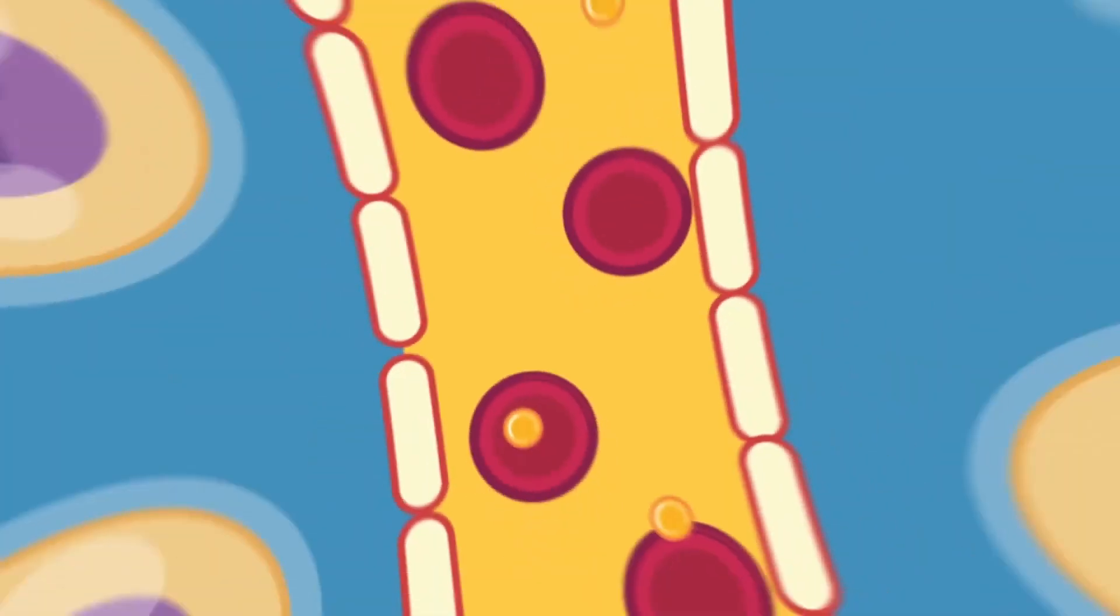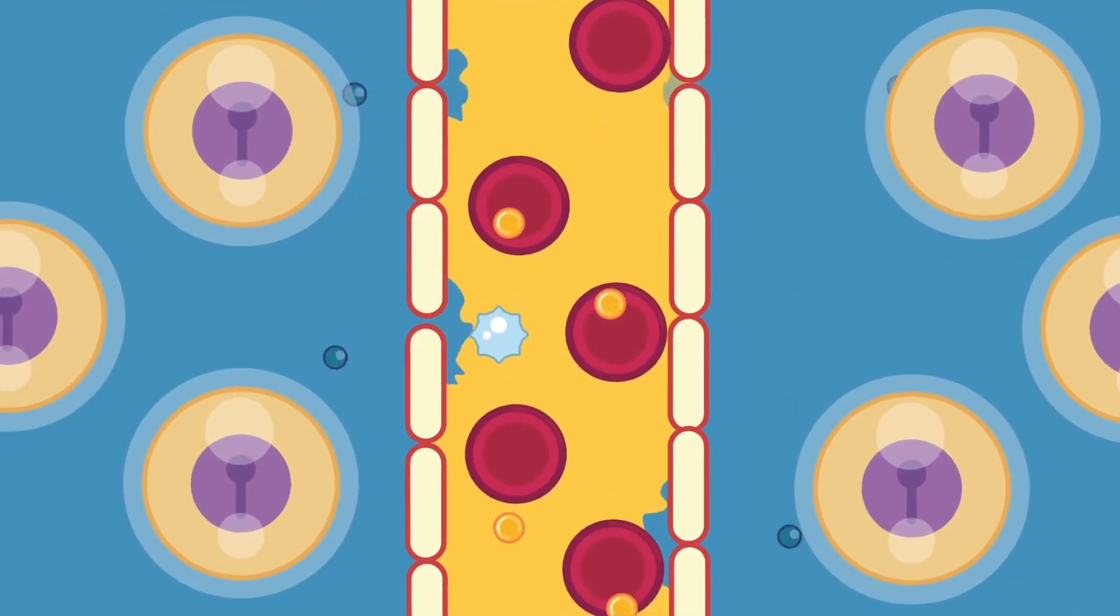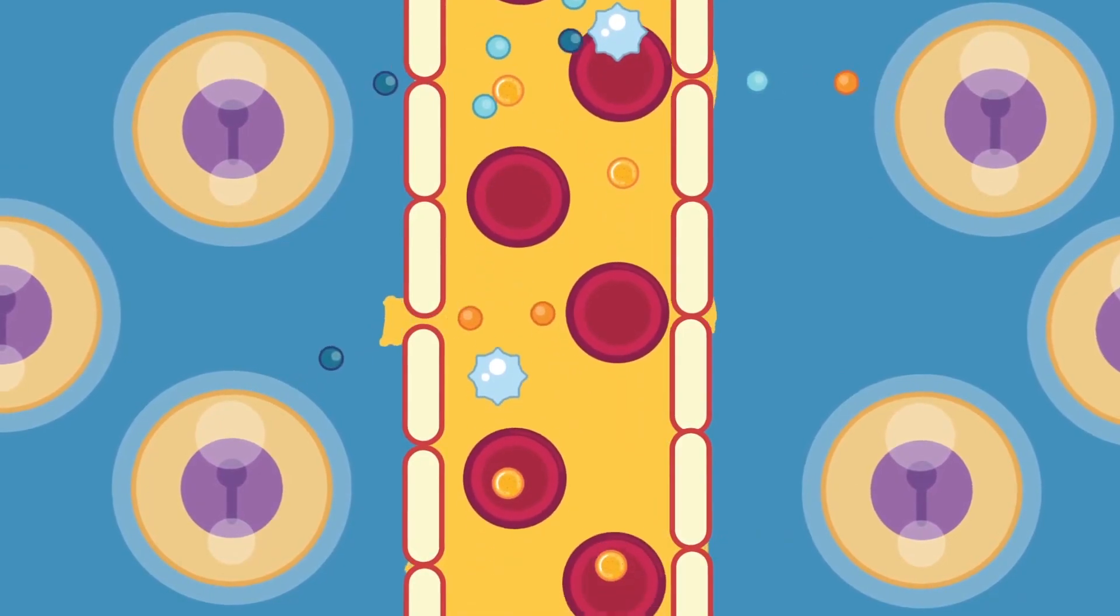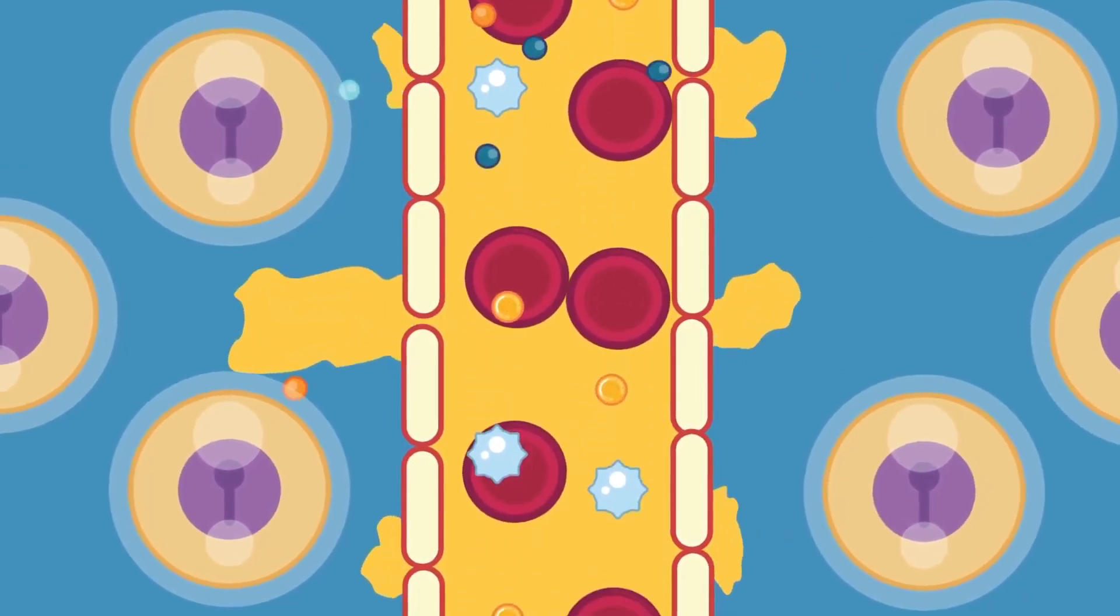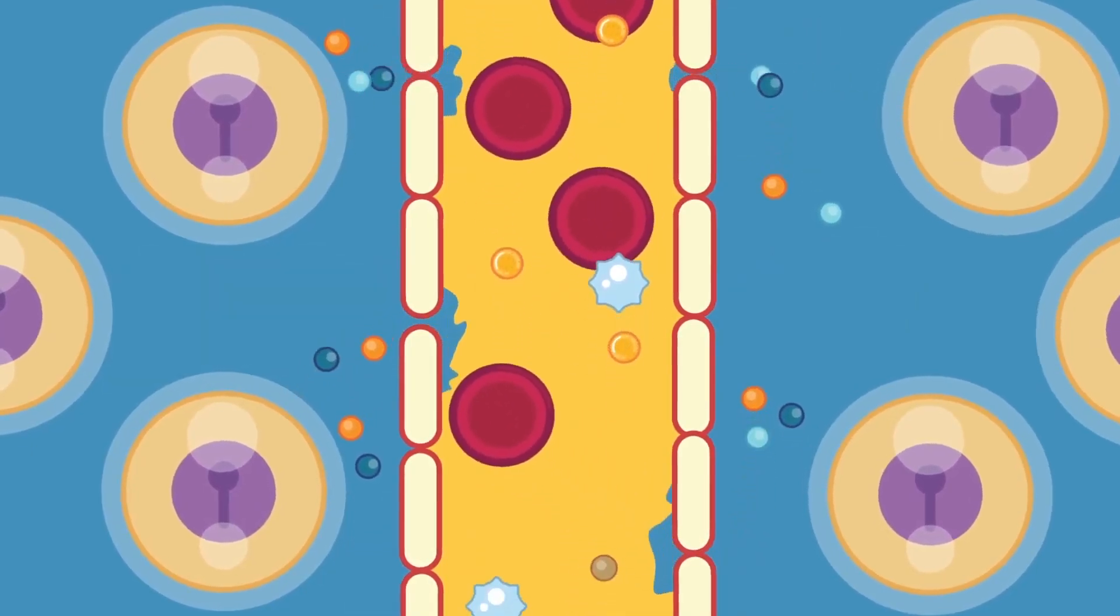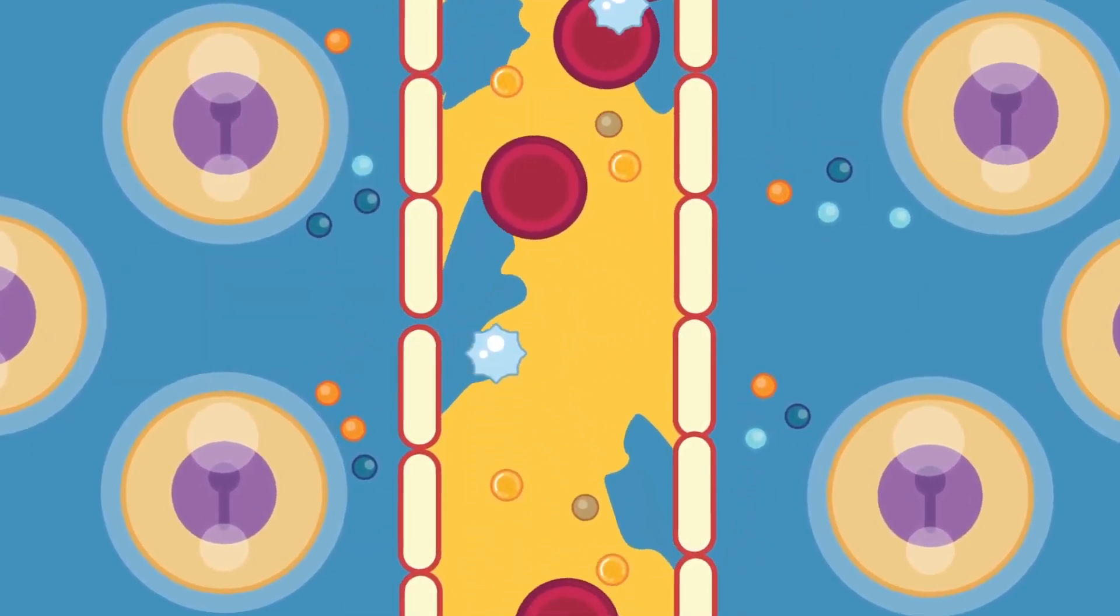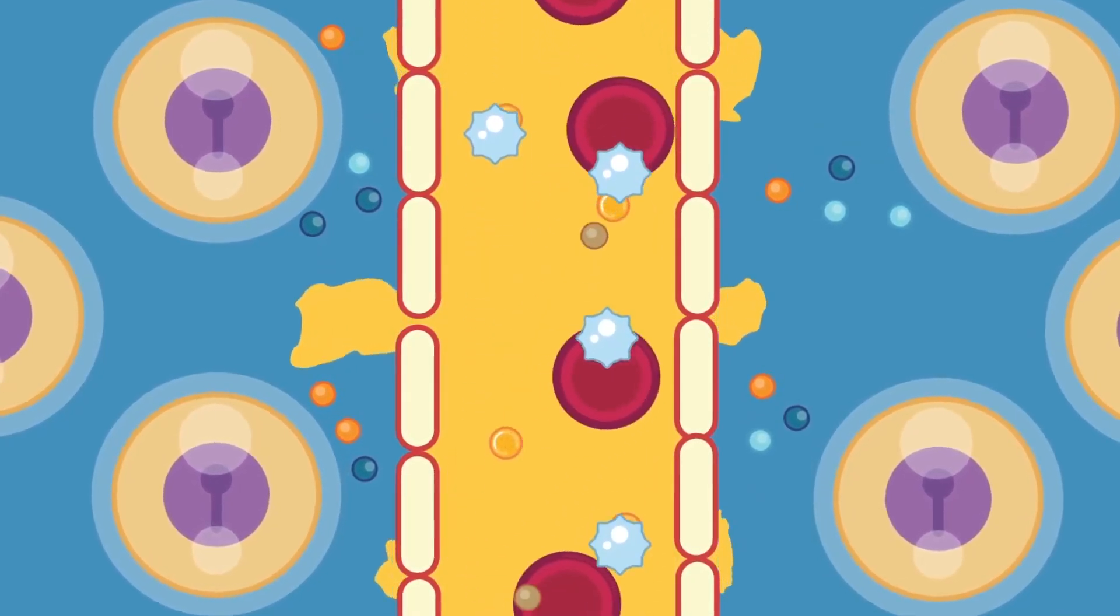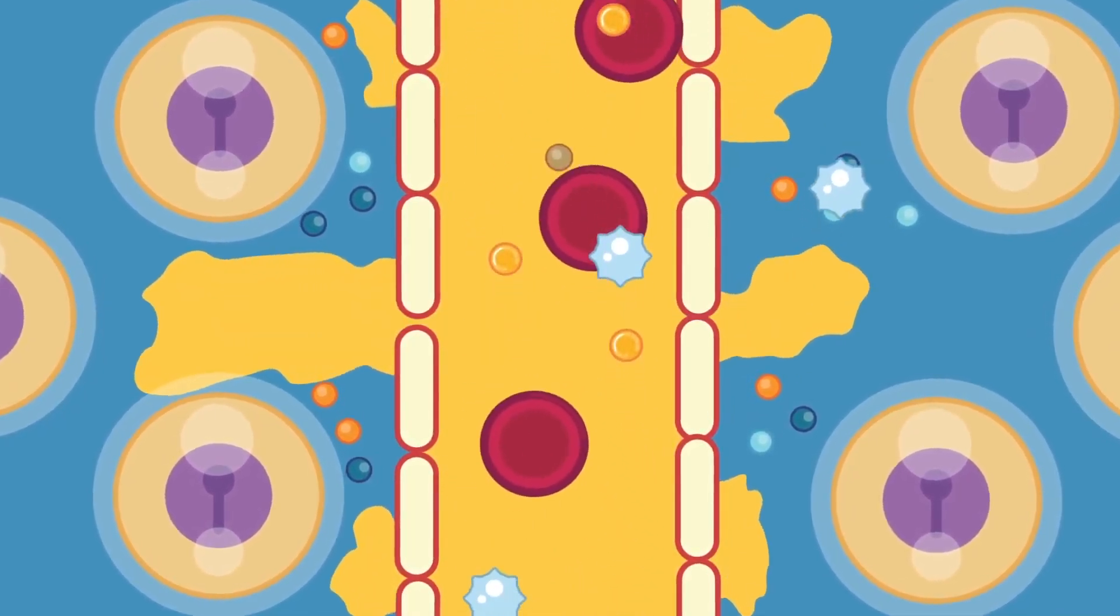Plasma and interstitial fluid are very similar because water, ions and small solutes are continuously exchanged between them across the walls of capillaries. The plasma that filters through the capillaries into the interstitial fluid does not contain red blood cells or platelets as they are too large to pass through, but it can contain some white blood cells to support the immune system.